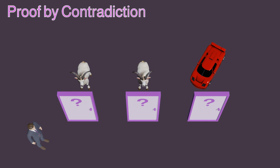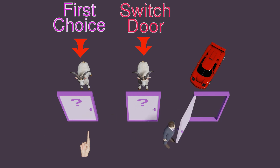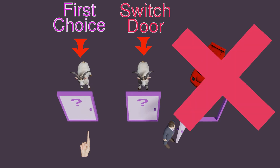Another way to come at this would be to do a simple proof by contradiction, where you say maybe your first choice could be the same as the switch door. Then if your first choice was a goat, and the switch door was somehow also a goat, that would force Monty Hall to reveal the door hiding the car. That contradicts the true premise that Monty Hall always reveals a goat door — he never reveals a car door.